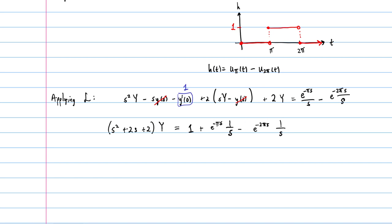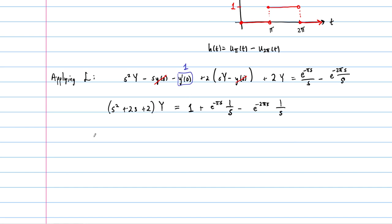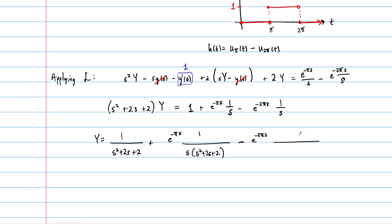Dividing through, capital Y equals 1 over s squared plus 2s plus 2, plus e to the minus pi s times 1 over s(s squared plus 2s plus 2), minus e to the minus 2 pi s times 1 over s(s squared plus 2s plus 2). We keep the terms separate to facilitate the inverse transformation.